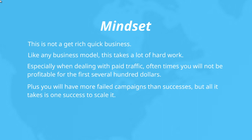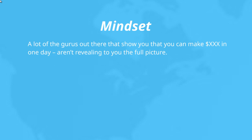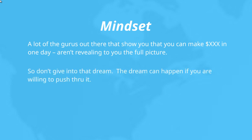The reality is that you're going to have more failed campaigns than successes, but all it takes is that one success to scale. You might test 10 or 20 different campaigns, and out of those you might find one or two which you can then hone in on and begin to scale. A lot of gurus out there just show you the success part — they're not revealing the full picture. I want you to understand the full truth and reality. It's okay to dream, as long as you understand the reality and are willing to push through it.